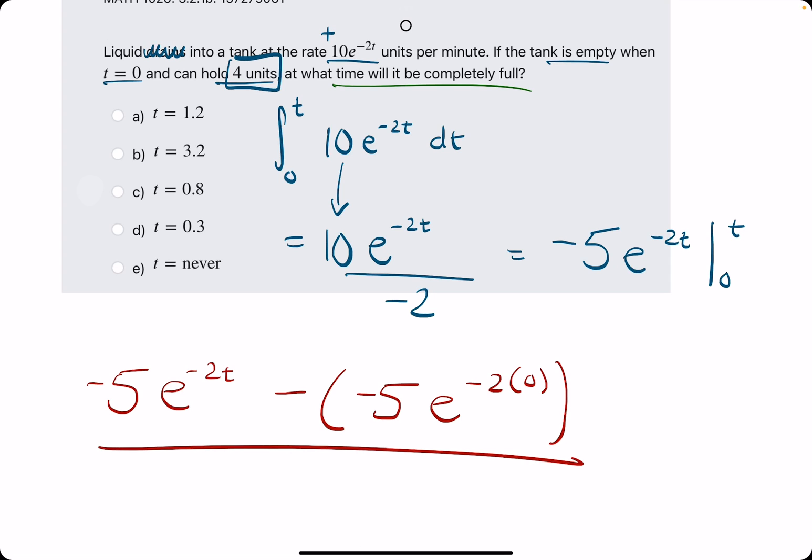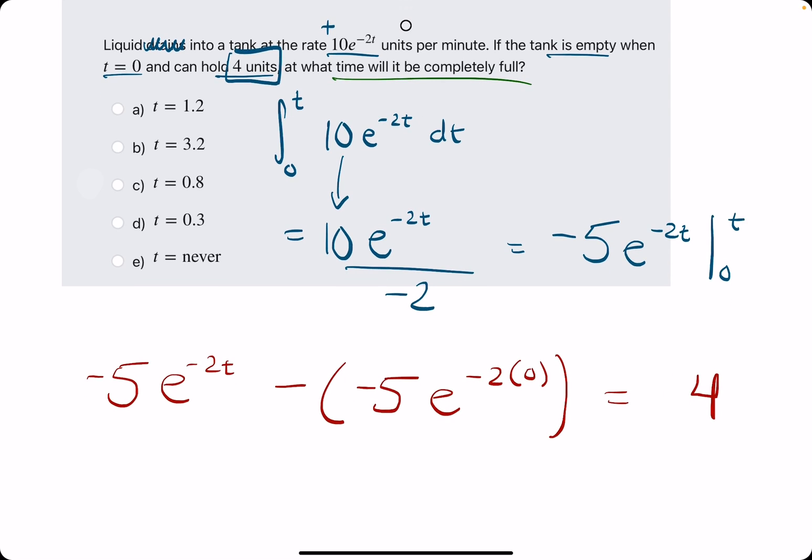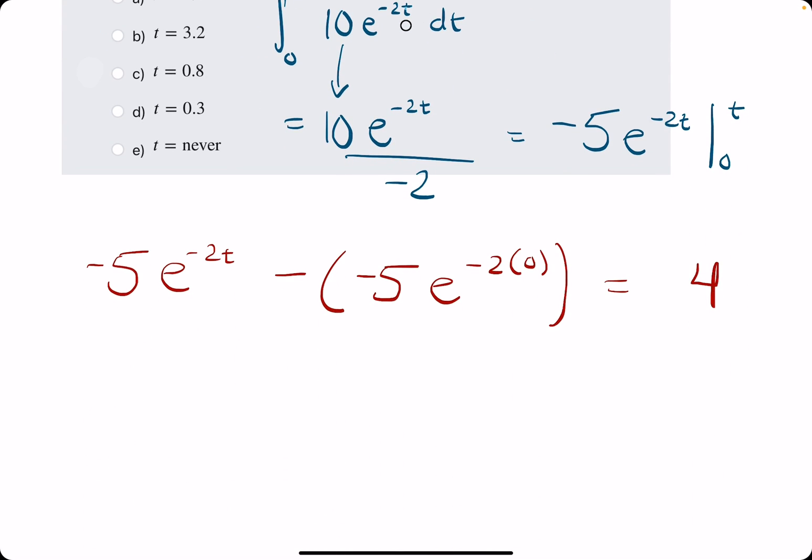This integral from zero to t represents the change in water or the change in liquid from zero to t. What we want is for this change from zero to t to be a positive 4. We're trying to find out where this change from start to t is equal to 4, because that will be when it is completely full, because it can hold 4 units.